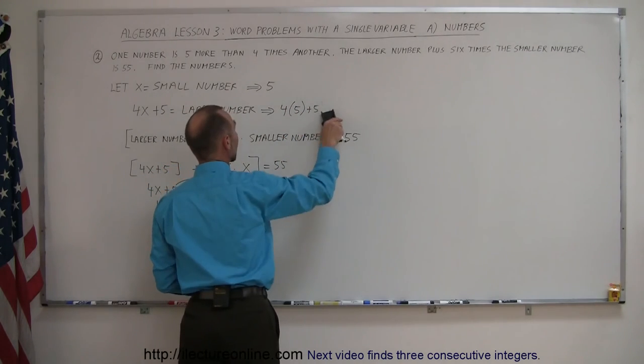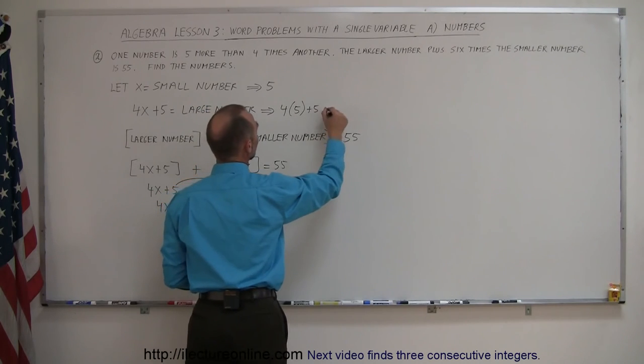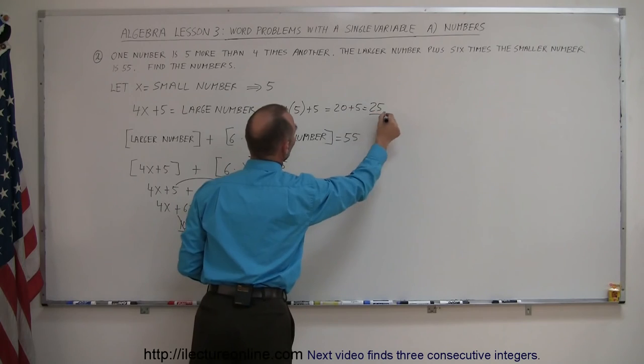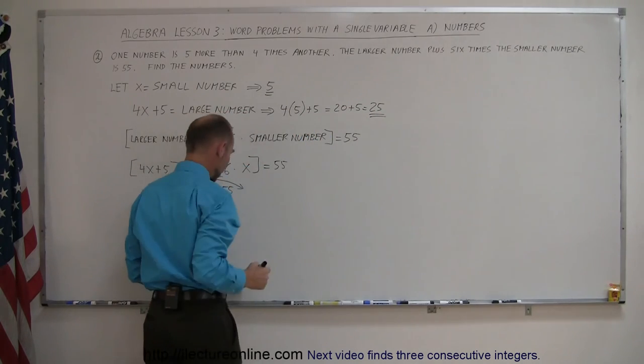We don't need parentheses around that one. So that's 20 + 5, which is 25. So there's the large number, and there's the small number.